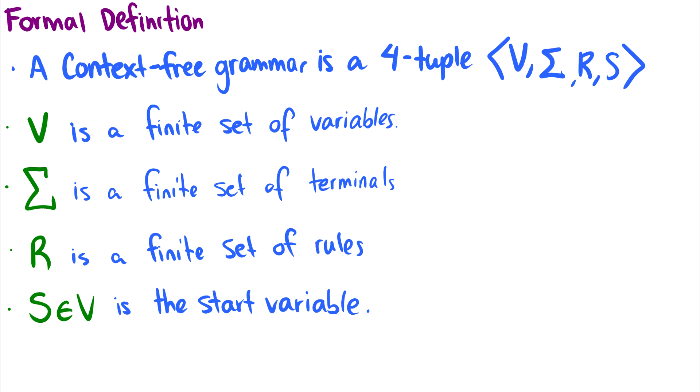Now I'll jump into a formal definition of a context-free grammar. So a context-free grammar is a four-tuple (V, Σ, R, S) where V is a finite set of variables. We denote these with capital letters, usually A, B, C, and so on. Typically in rules, I will use R as a default variable.